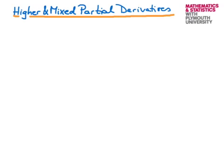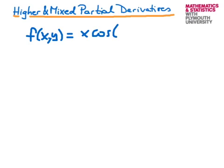Let's start off by looking at a function f, which is a function of x and of y — two variables. I'm going to choose the function to be x multiplied by the cosine of x times y.